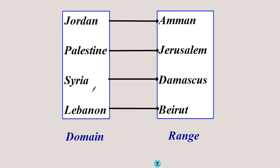If we look at this relationship where we have the elements of the first set — states in the Levant — and the second set is the capitals: this is the domain, this is the range. We have a relationship between each state and its capital. This is called a mapping. Jordan maps to Amman, Palestine maps to Jerusalem, Syria maps to Damascus, and Lebanon maps to Beirut. Another way of saying that: Amman is the image of Jordan, Jerusalem is the image of Palestine.